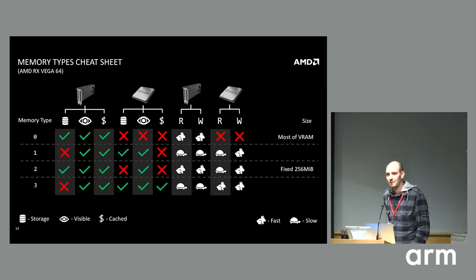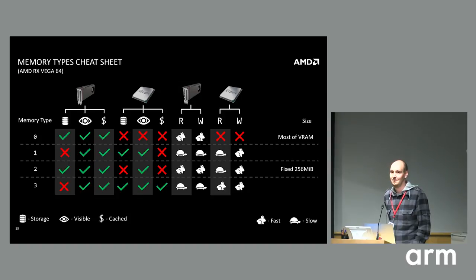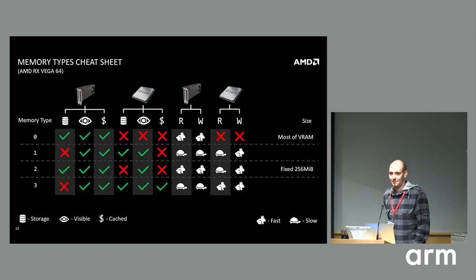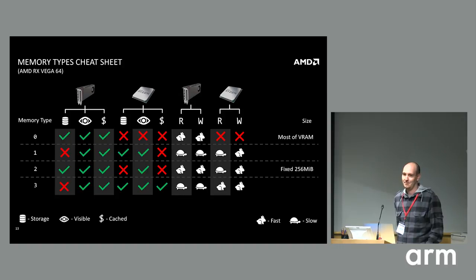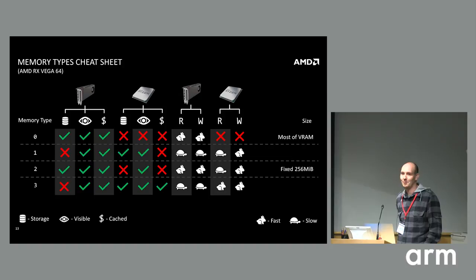Audience member Yuri asks about the size query result varying — if the size can change between the query and the actual allocation, that implies hidden state and a potential race condition. The speaker acknowledges this is a real concern and offers to explain offline why it was done that way, noting it may be fixed on the bleeding edge.